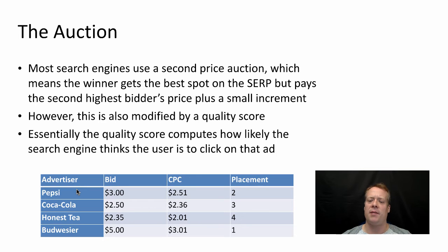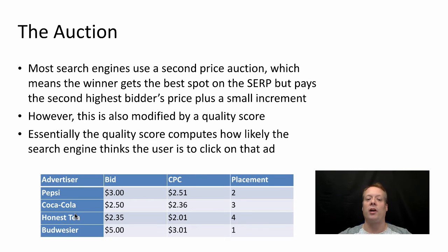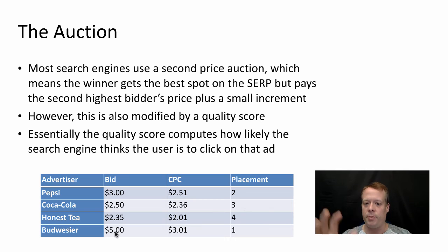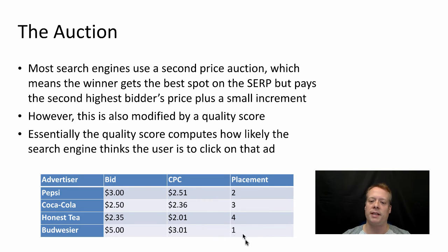Imagine we have four advertisers all bidding for a search on something like 'beverages': Pepsi, Coca-Cola, Honest Tea, and Budweiser — maybe different marketing departments bidding independently. Pepsi bids $3.00, Coca-Cola $2.50, Honest Tea $2.35, and Budweiser $5.00. Assuming they all have the same quality scores, Budweiser has the highest bid so it gets the number one placement, but it only pays what Pepsi bid plus a small increment — say one cent. So Budweiser pays $3.01. Pepsi didn't feel bad because they weren't willing to pay that, and Budweiser feels great because they didn't have to pay the full $5.